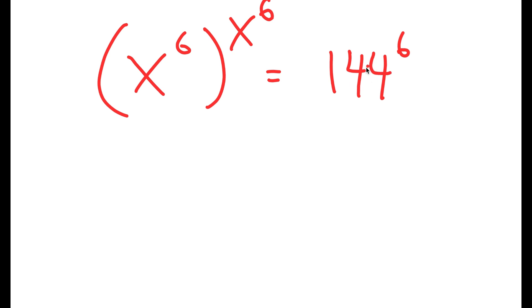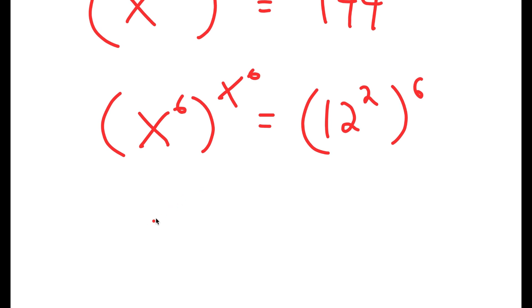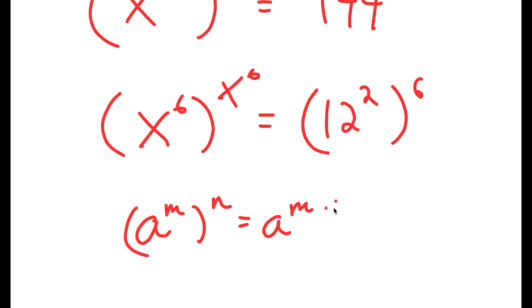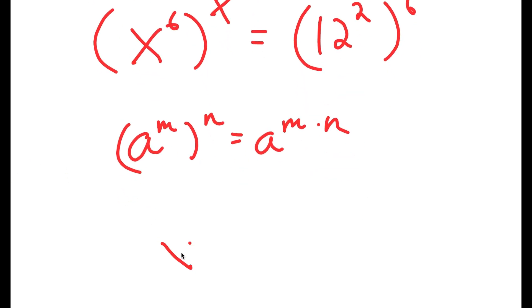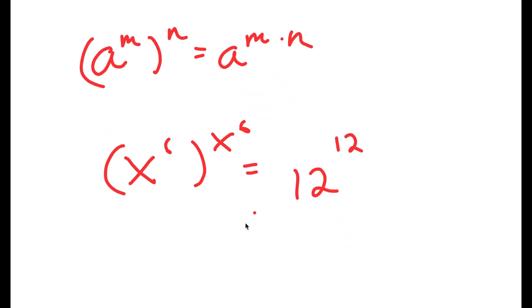Now we just need to do the same with the right-hand side. I'm going to rewrite 144 as 12 squared. So now I have x to the power of 6, to the power of x to the power of 6, is equal to 12 squared to the power of 6. Using the rule that a to the power of m to the power of n equals a to the power of m times n, this becomes 12 to the power of 2 times 6, which is 12 to the power of 12.